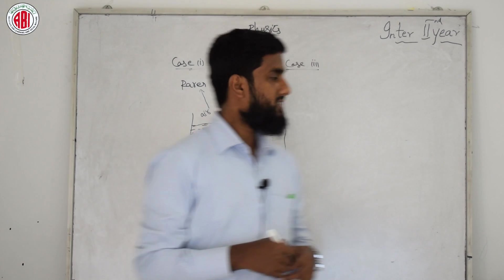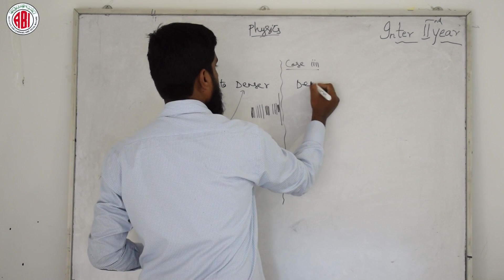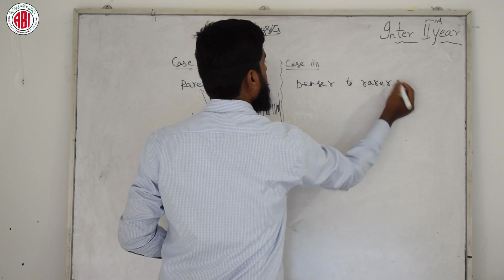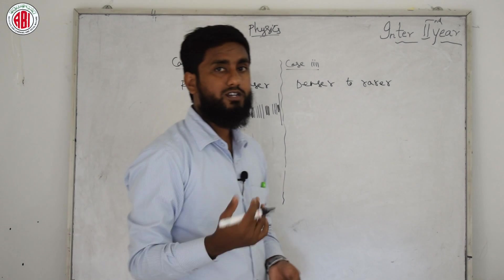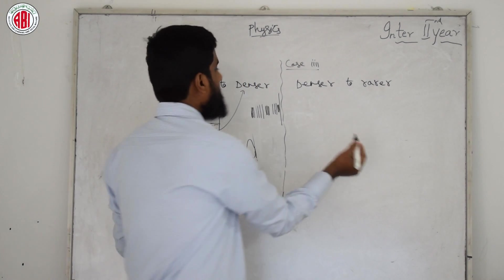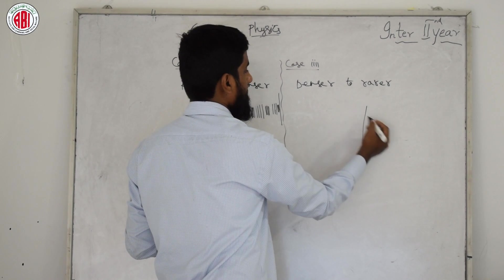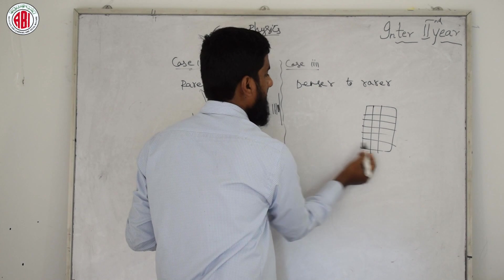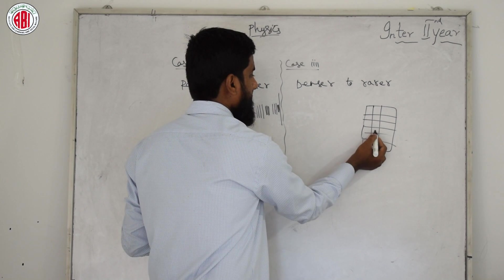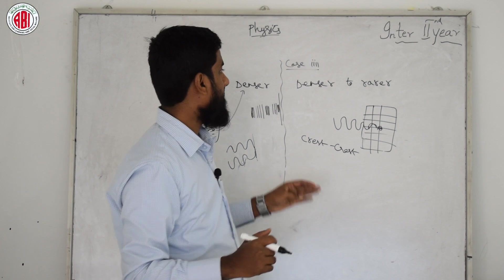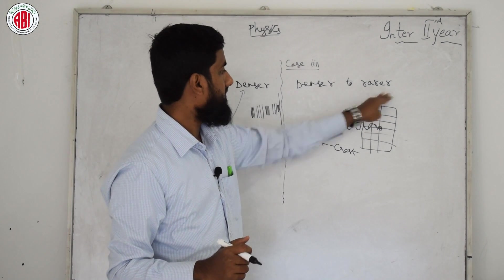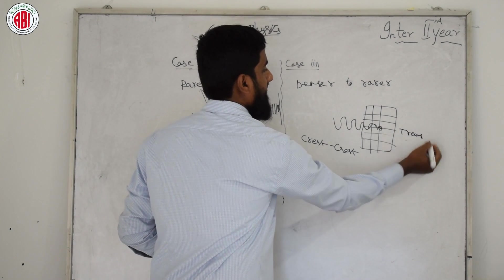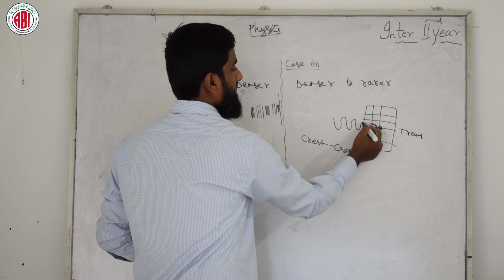Case 2: the wave travels from a denser medium to a rarer medium. Suppose this is your wall here — that is the denser medium — and the rarer medium is on the other side. We again consider transverse waves and longitudinal waves emitted from the denser side toward the rarer medium.